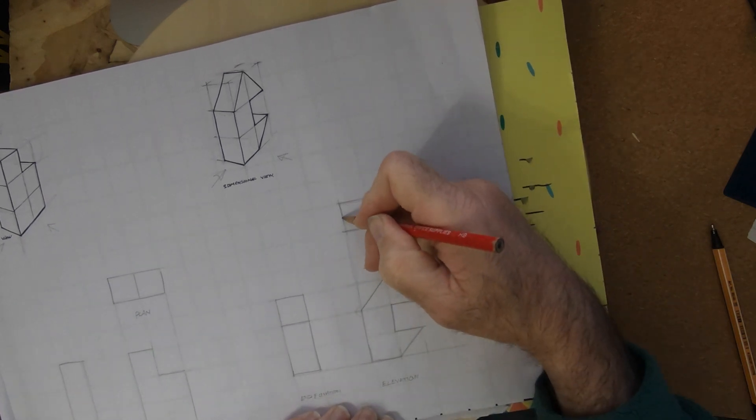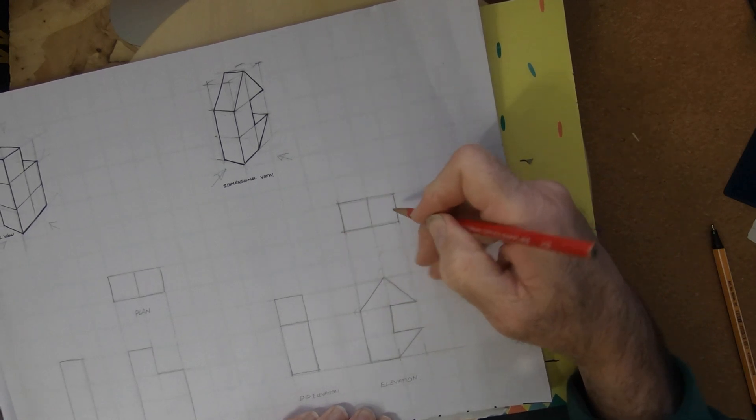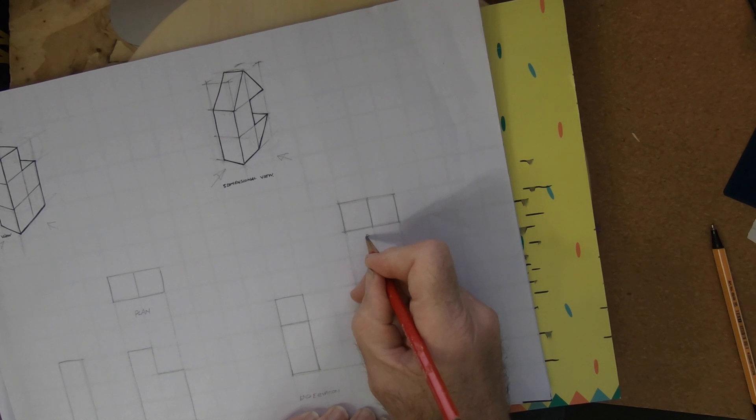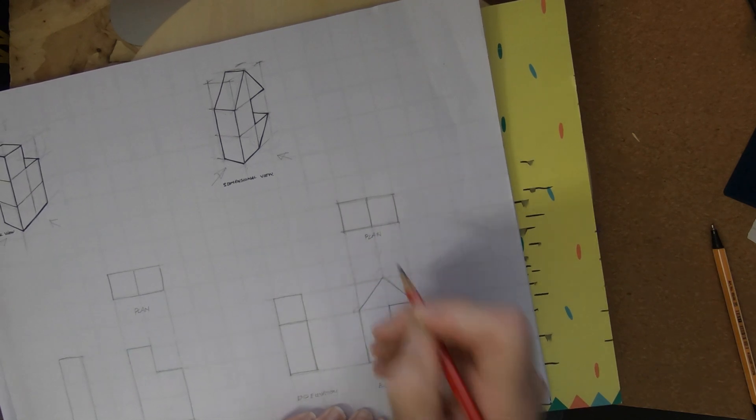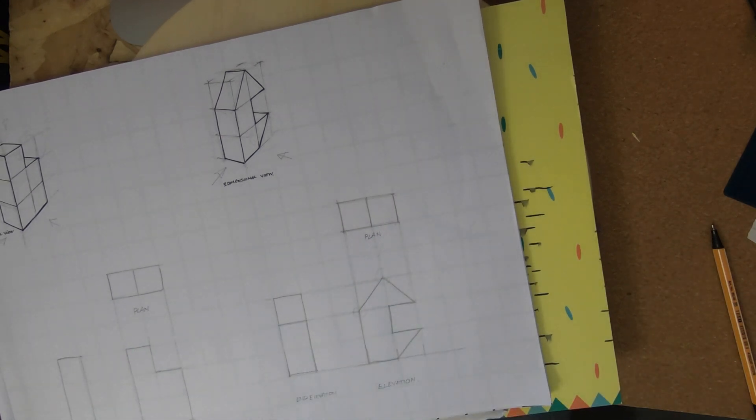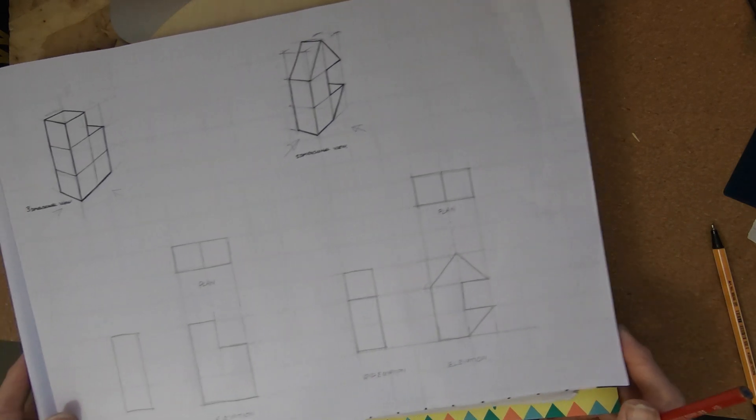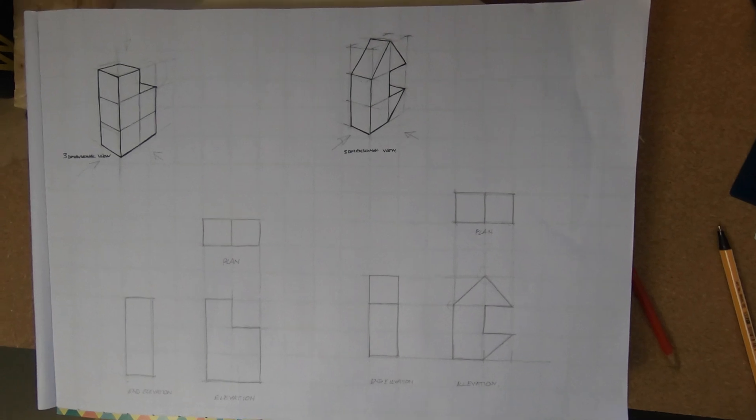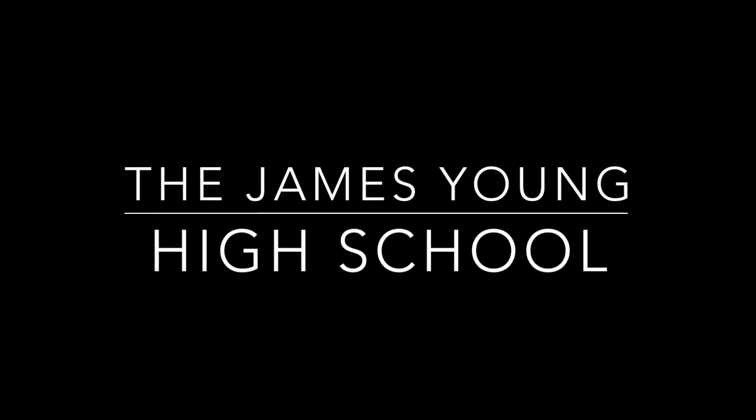But because we're learning a little bit more about this orthographic sketching, we should understand that those two squares are actually sloping surfaces longer than a square at the top of this particular object. So there we have it. We've got two drawings. Have a go in the next one yourself.